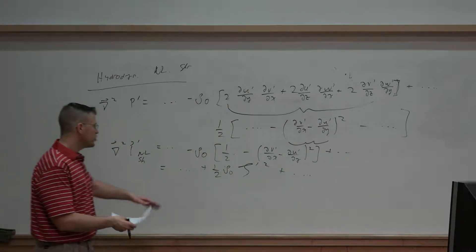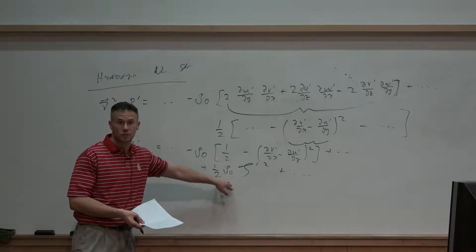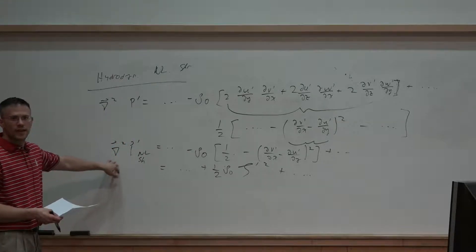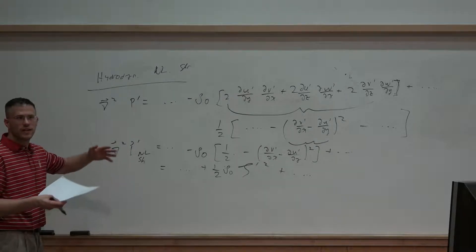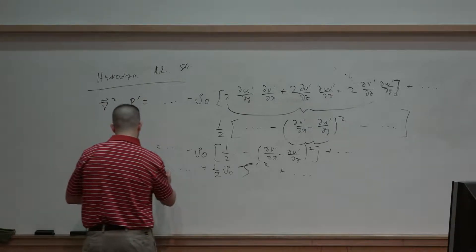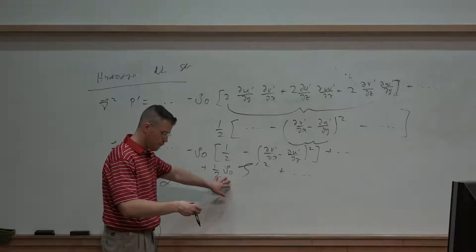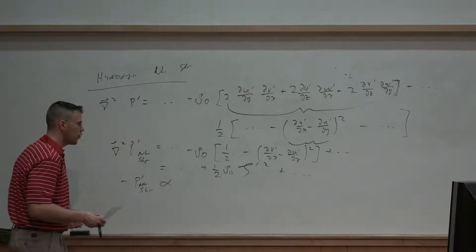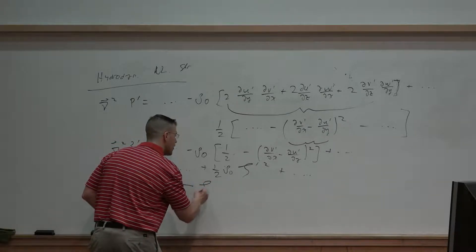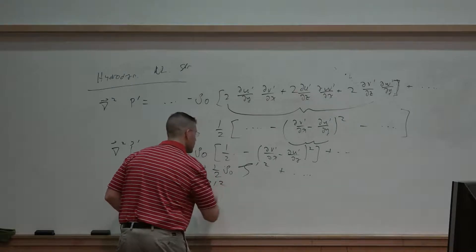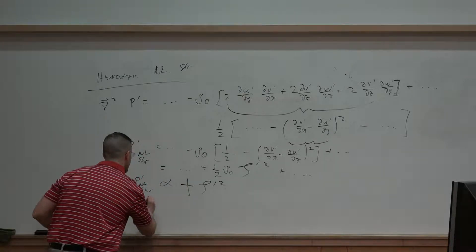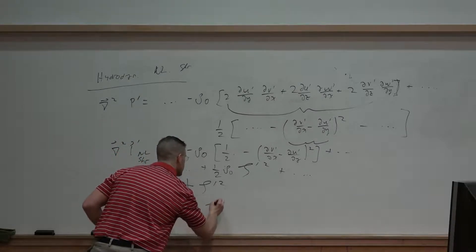If we think about this physically, dropping the constant density, we can express the left-hand side: del squared p prime — taking two derivatives and thinking of sinusoidal wave patterns — we just get back out. So minus p prime_nl shear is proportional to, ignoring the one-half rho naught, minus ζ' squared. Correcting the sign, p prime_nl shear is proportional to minus ζ' squared.